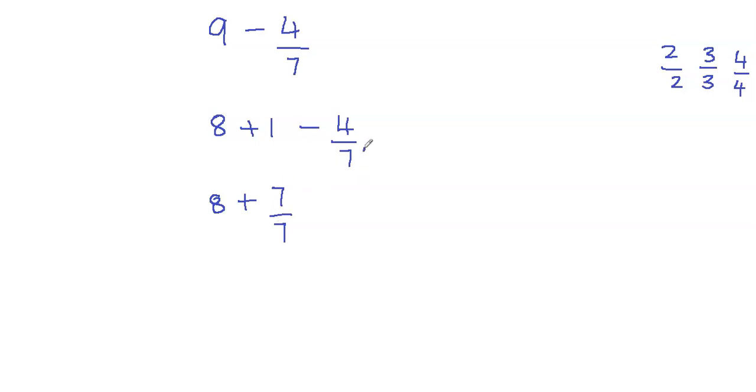Well, the 7 comes from here, from my denominator. The 7 comes from the denominator. Since I want to have the same denominator, I want to have the common denominator in order to subtract the fractions. If I don't have a common denominator, then I'll have to find a common denominator.